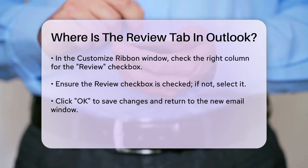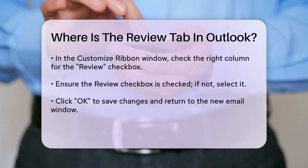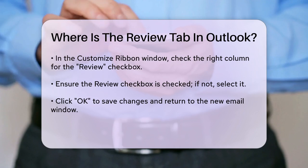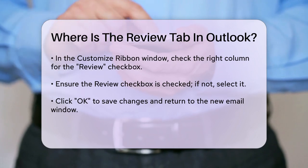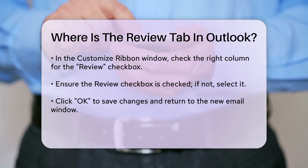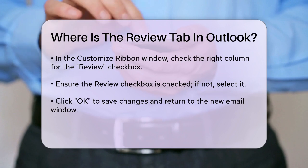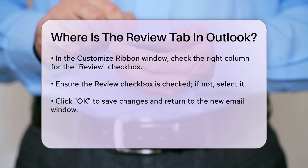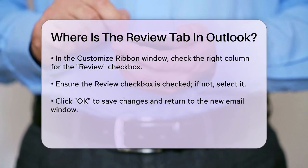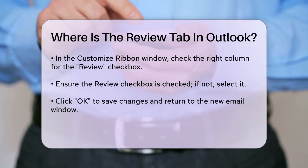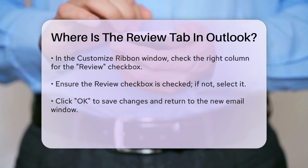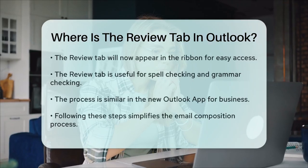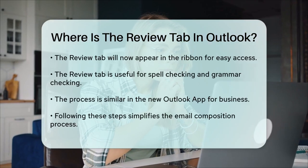Now, when you open a new email, you should see the Review tab in the ribbon. This tab is particularly useful for spell checking, grammar checking, and other review functions that help you ensure your emails are error-free before sending them.